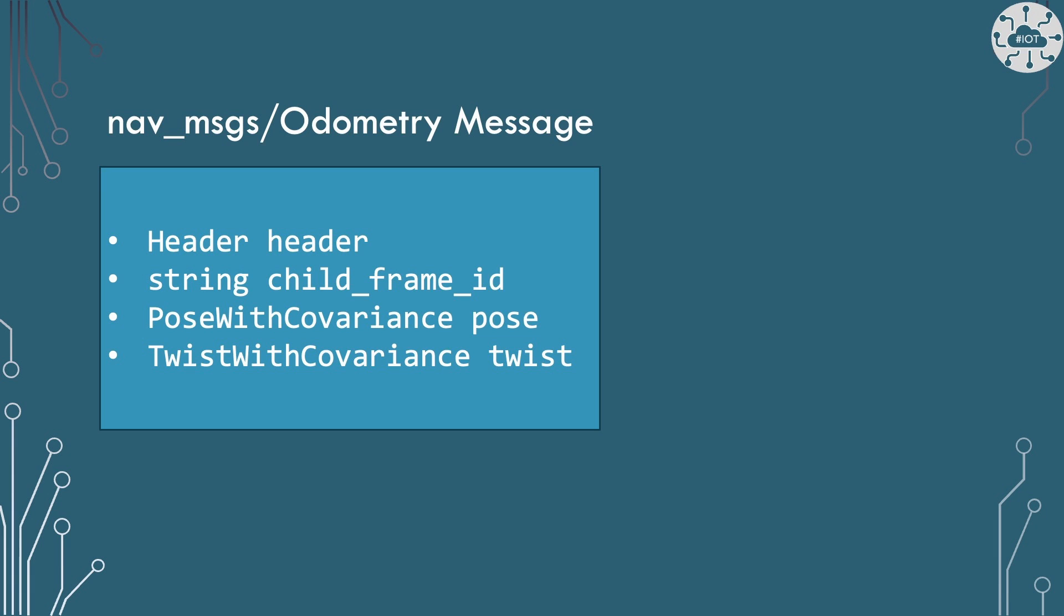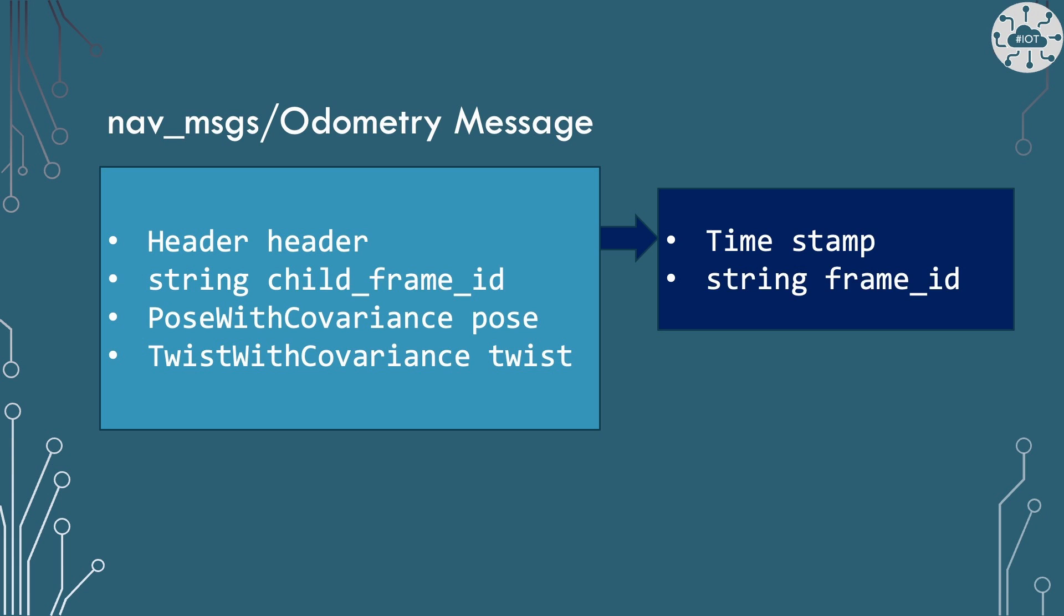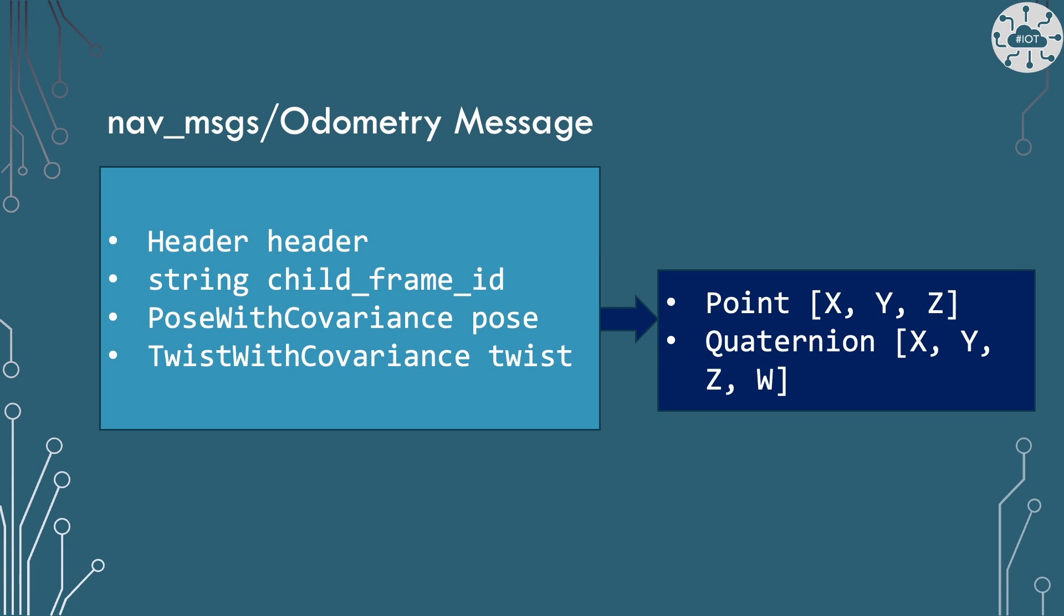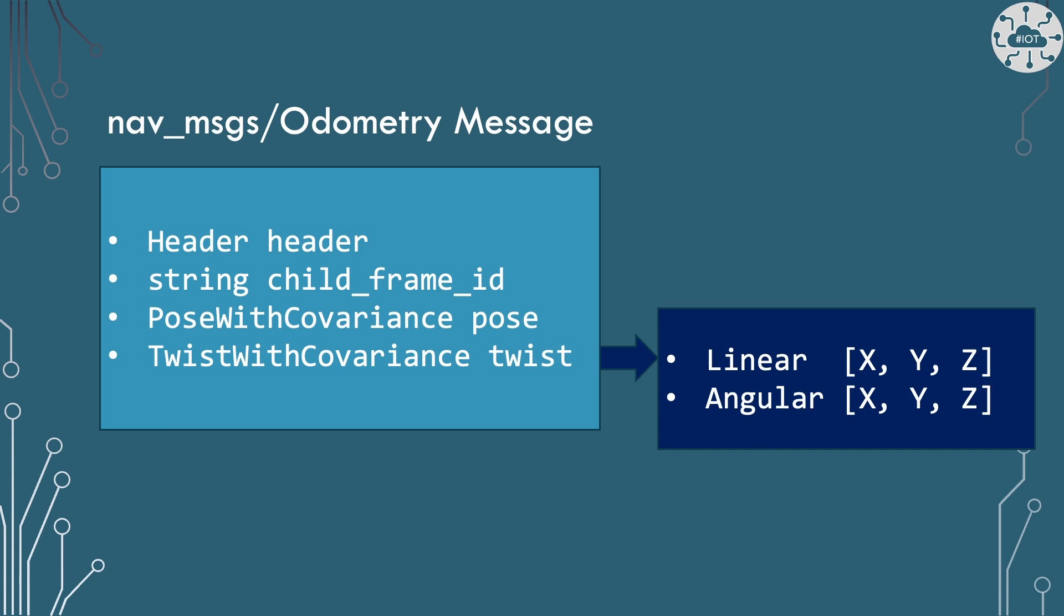The header is going to have a timestamp and that frame ID which is going to be Odom. The pose is the point position and quaternion of rotation for our robot. And the twist is the linear and angular accelerations. So that's the message we're going to publish.